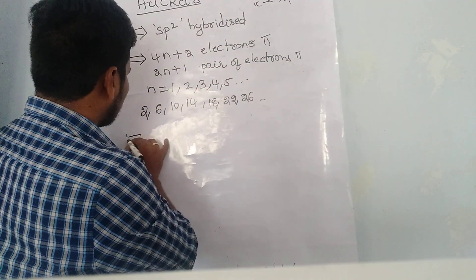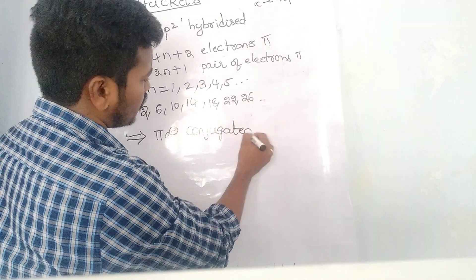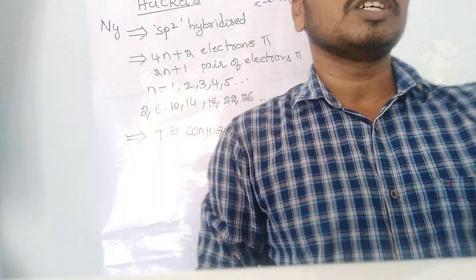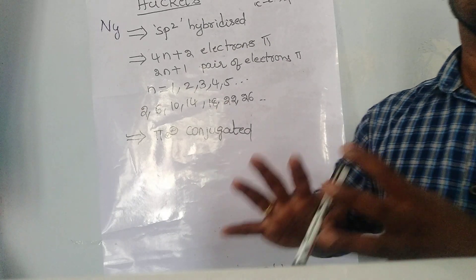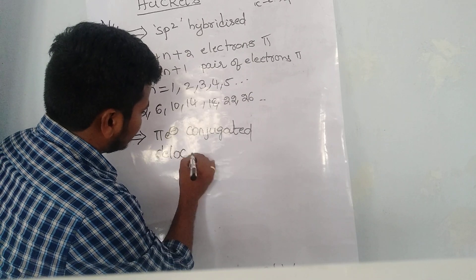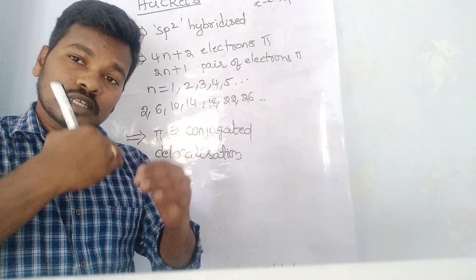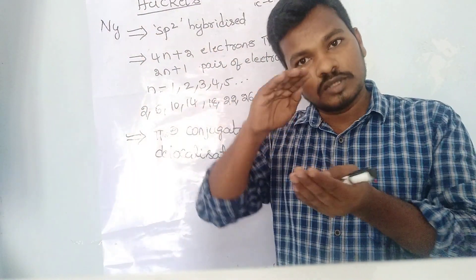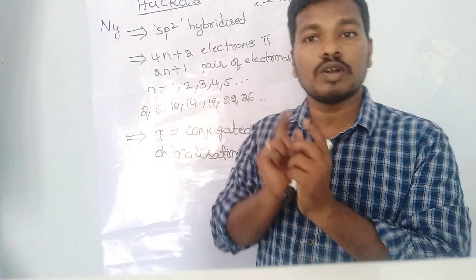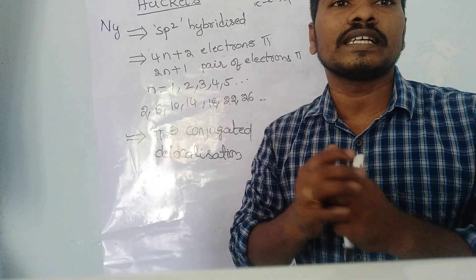The third rule is that all the pi electrons should be in a conjugated system. They should be conjugated, meaning resonance should occur — complete delocalization of the pi electrons should take place. Localization means electrons stay in one place; delocalization means they change their places. In chemistry, this change of electron positions is called resonance. Conjugated means the system undergoes resonance due to partial double bonds.